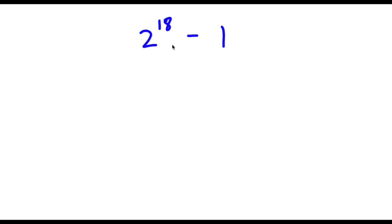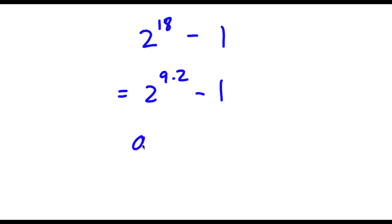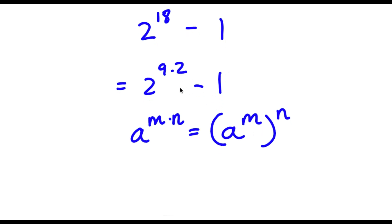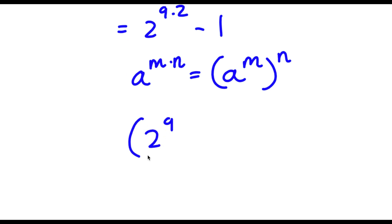Alright, so I have 2 to the power of 18 minus 1. I'm first going to write 2 to the power of 18 as 2 to the power of 9 times 2. So now I have 2 to the power of 9 times 2 minus 1. Now if I have something in the form a to the power of m times n, this is equal to a to the power of m to the power of n. So I'm rewriting this as 2 to the power of 9 to the power of 2 minus 1.